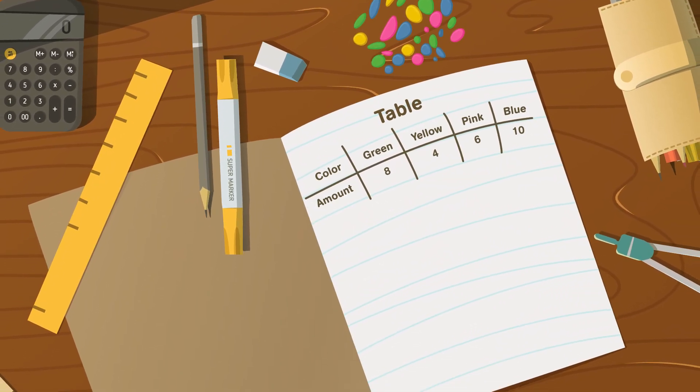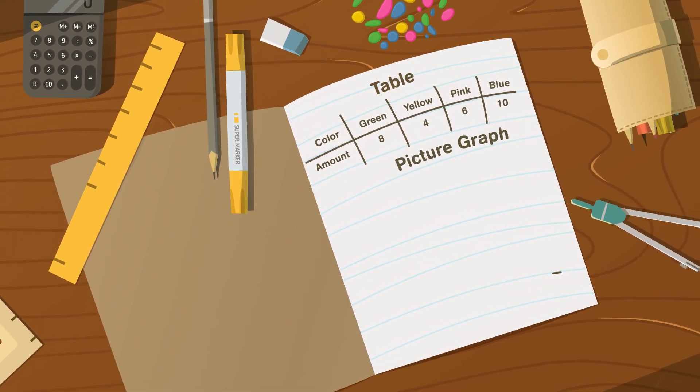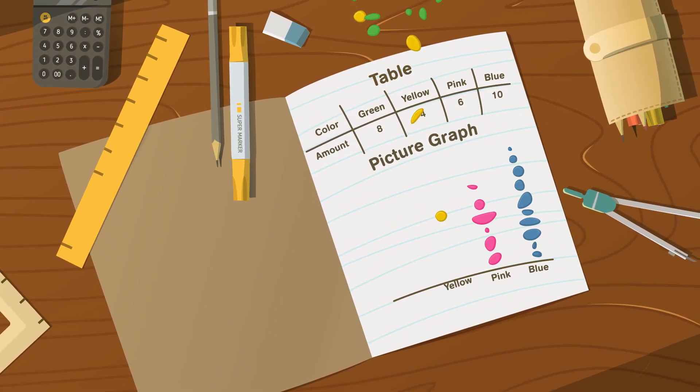Maria wants to turn her data into a graph. A picture graph makes it easy for Maria to see what she has.